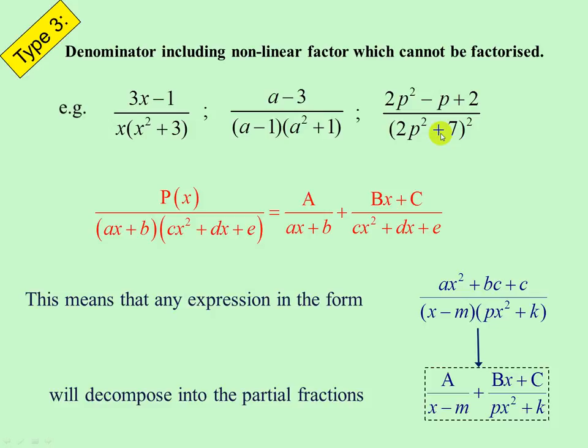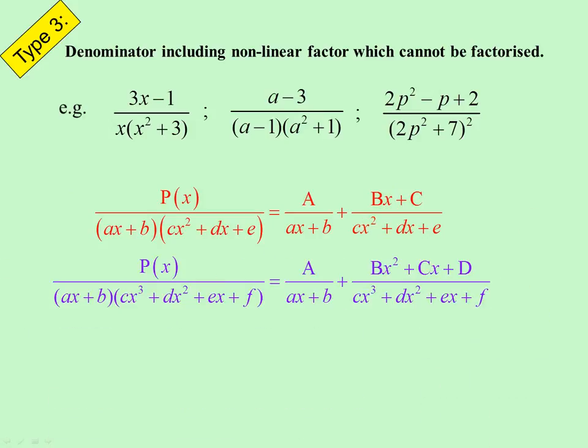This one is a bit more complicated - you won't really have to do that - but this is going to end up the same as raising to the power of the linear denominators. You'll end up with 2p squared plus 7 and 2p squared plus 7 squared, and your numerators will be ax plus b and cx plus d. We won't throw that at you at this stage though, don't worry.